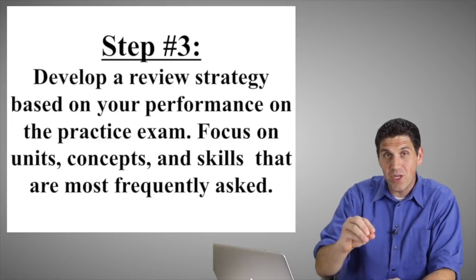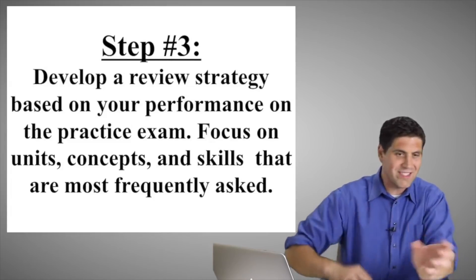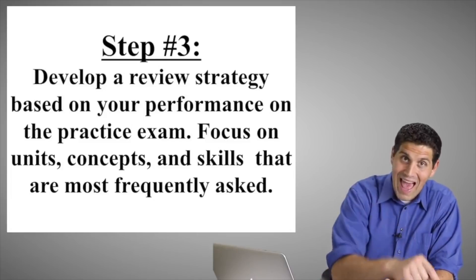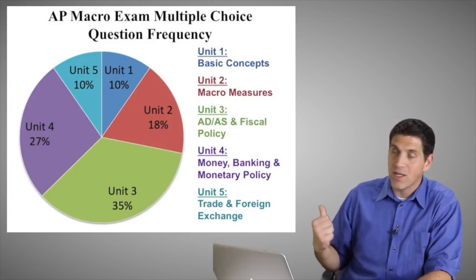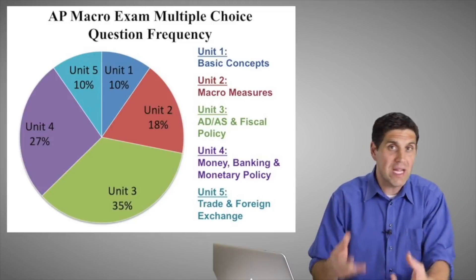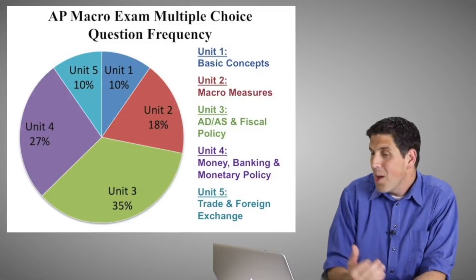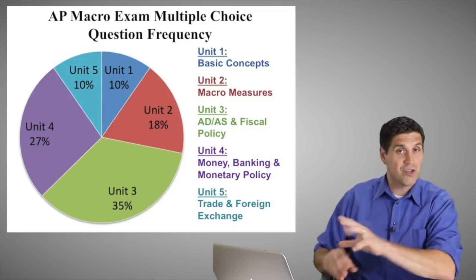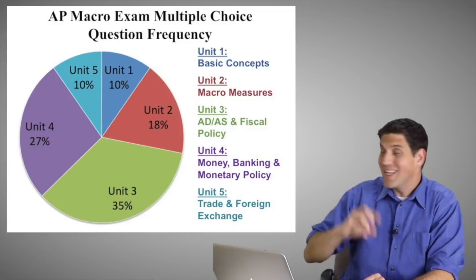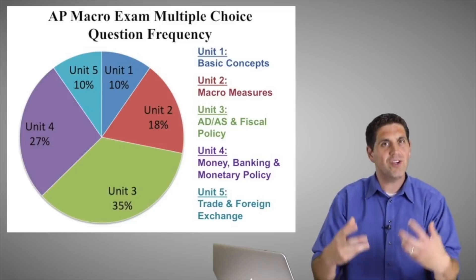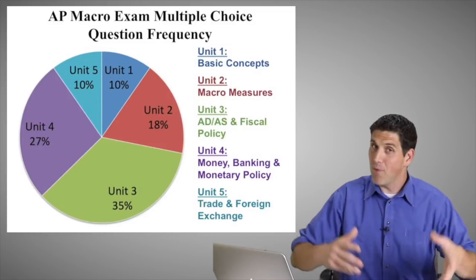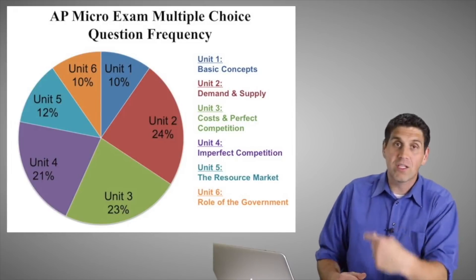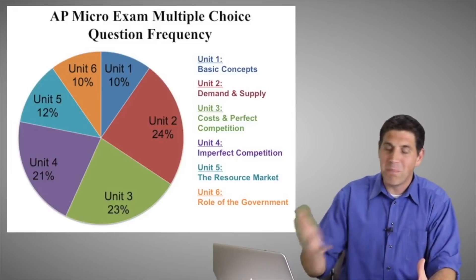Step number three: develop a review strategy based on your performance on that test. Look at your results, see which units you need more help on, and then focus on the units, concepts, and skills that are most frequently asked. Not all units are equally important — if you're great at unit one, that's good, but it's only worth about 10% on the AP test. This is based on multiple choice questions, specifically how often concepts from each unit appear. You get the most bang for your buck in macroeconomics at unit three and unit four. The same concept applies for microeconomics as well.